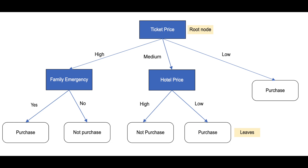At each split, a separation condition is used to determine how to split the parent node into child nodes. The process continues until some stopping rule is satisfied — this process is called recursive partitioning. Common splitting criteria to choose the best separation include chi-square, Gini, and entropy. SAS Enterprise Miner uses the so-called log-worth algorithm.